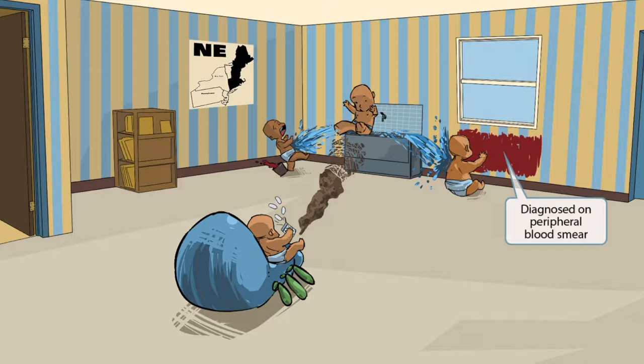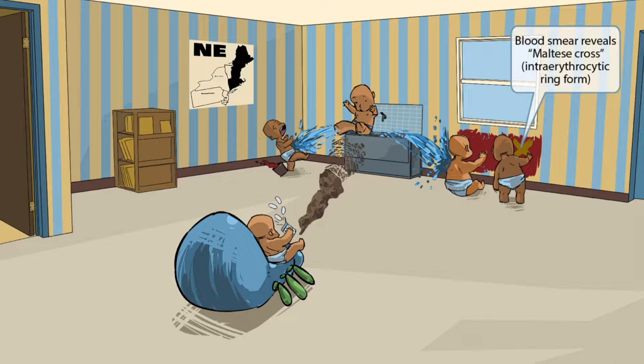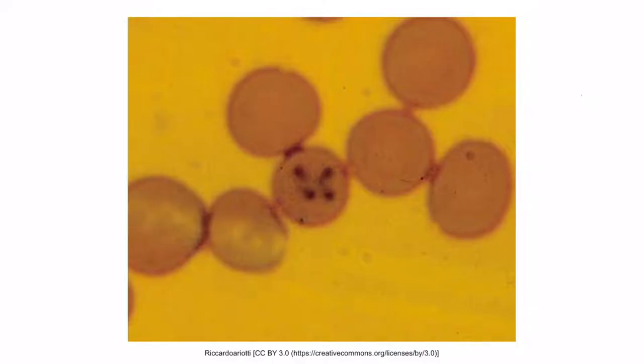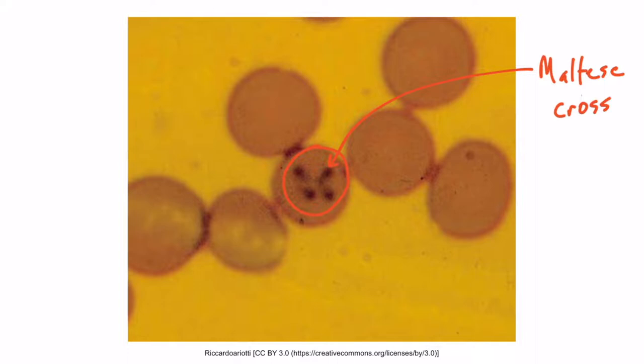Another baby has added a gold cross with gold paint to the wall painting. This Maltese cross found inside the red blood cells is often referred to as a ring form. This is a microscopic image of a peripheral blood smear in a patient with babesiosis — you can see a red blood cell with a Maltese cross in the center. Another term you may come across is intra-erythrocytic inclusions, meaning inside the erythrocyte, which is exactly what this Maltese cross represents.